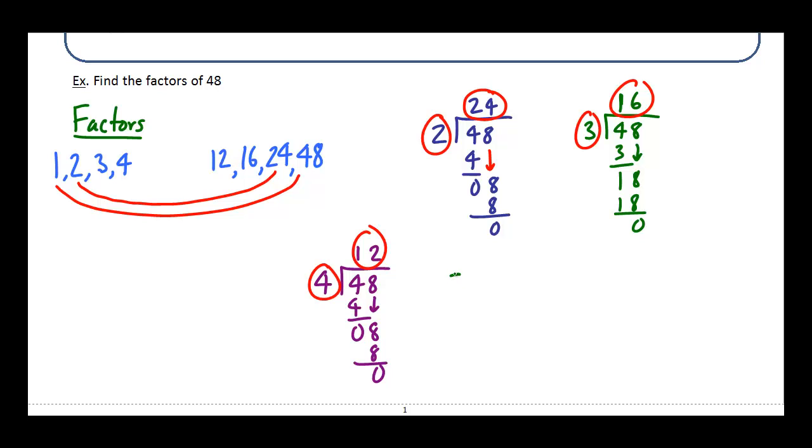All right, next is five, see if five goes into 48. Now five doesn't go into four. But I know that five goes into 48 nine times, give me 45. And 48 minus 45 is three. So I do have a remainder here. And if I have a remainder, then that means five is not a factor of 48.